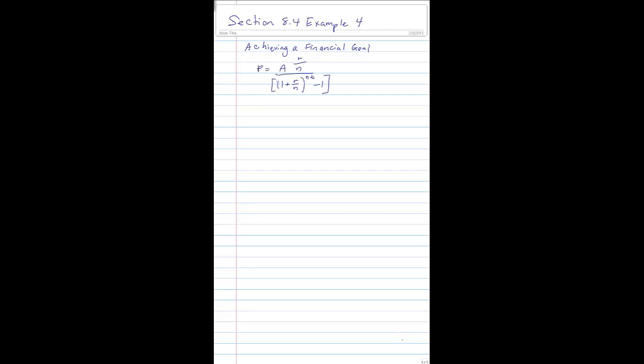And we're going to use this equation. We want to know the amount we need to deposit each month, which is P, the deposit, that's going to be made at the end of each compounding period.